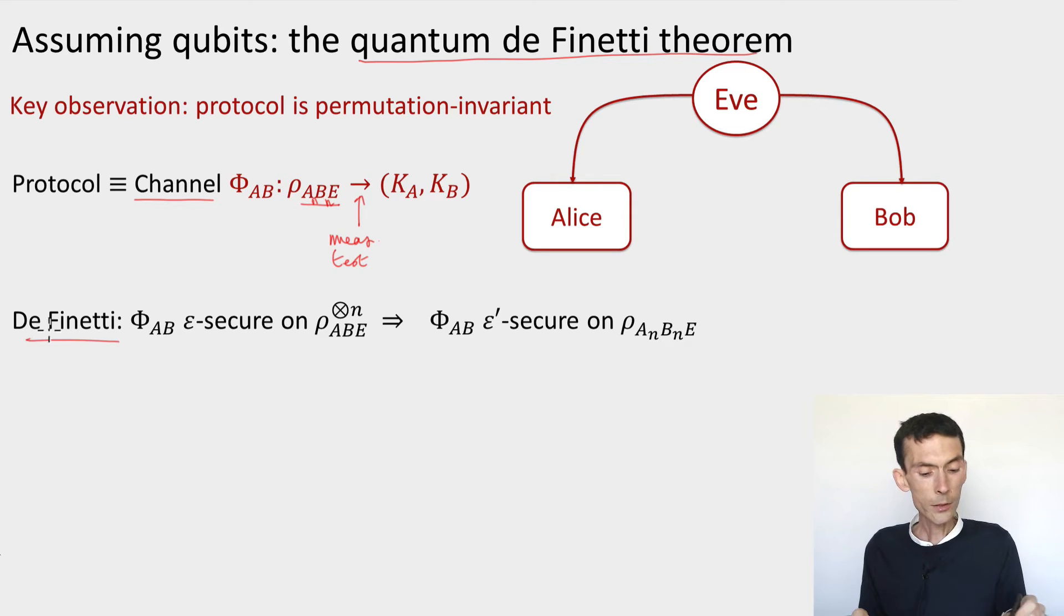I could randomly permute the way the rounds are numbered at the start of the protocol, and randomly unpermute them at the end of the protocol, I would get exactly the same protocol. And now the quantum de Finetti theorem is a theorem that applies to these kinds of channels that have this permutation symmetry. And the theorem is going to say that, informally, if the channel that's implemented by the protocol, so by a certain set of devices, call it Φ_AB, if I can establish that this channel is secure with some security parameter epsilon.